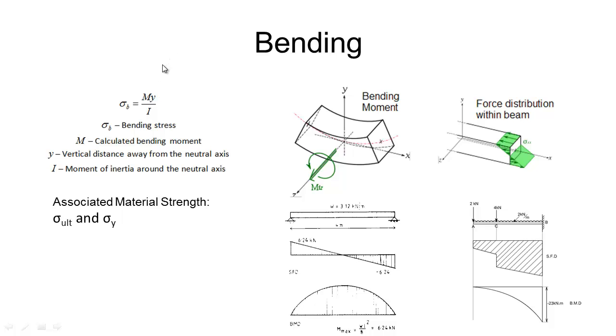Bending. So slightly more complicated here. So our equation is stress equals MY on I, where we have the bending stress, we have the calculated bending moment. So this is where using our bending moment diagram comes in handy and being able to derive those bending moments. We have Y which is the vertical distance away from the neutral axis and I which is the moment of inertia of our section. So you can see here on these diagrams how we have a stress distribution coming across our section.